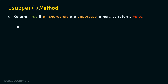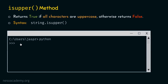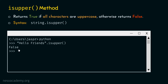The syntax is similar: string.isupper() — string, dot operator, then the method. Let's open the command prompt and type: 'Hello, friends'.isupper() — the string is 'Hello, friends'. If we hit enter, we get false as a result, because not all characters are uppercase.